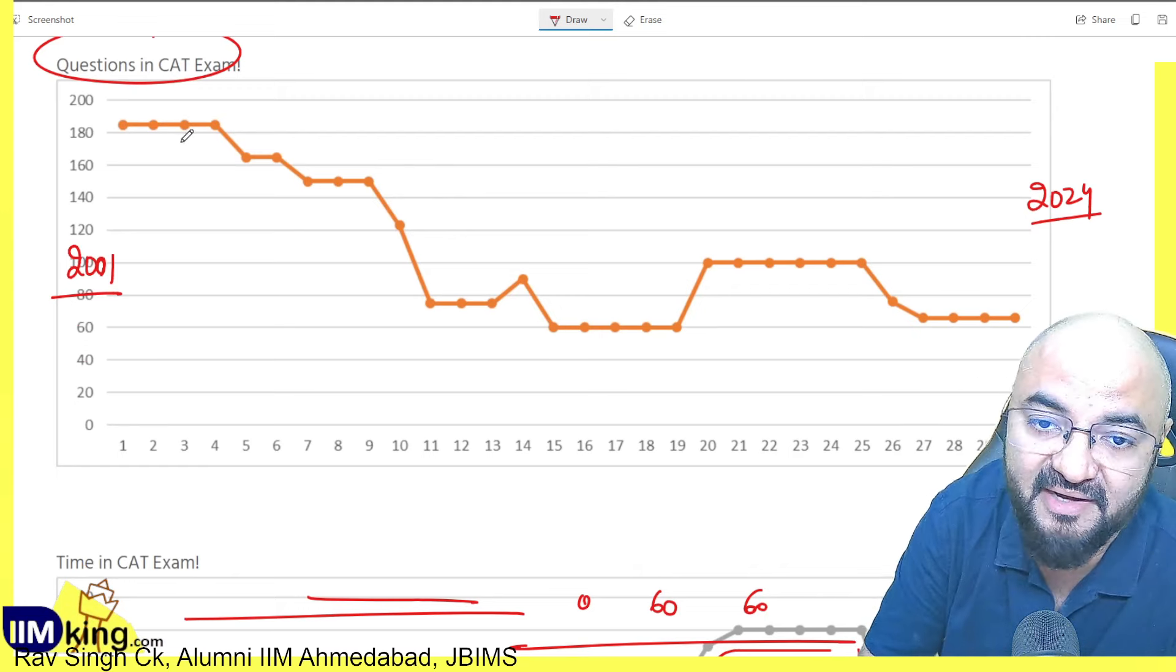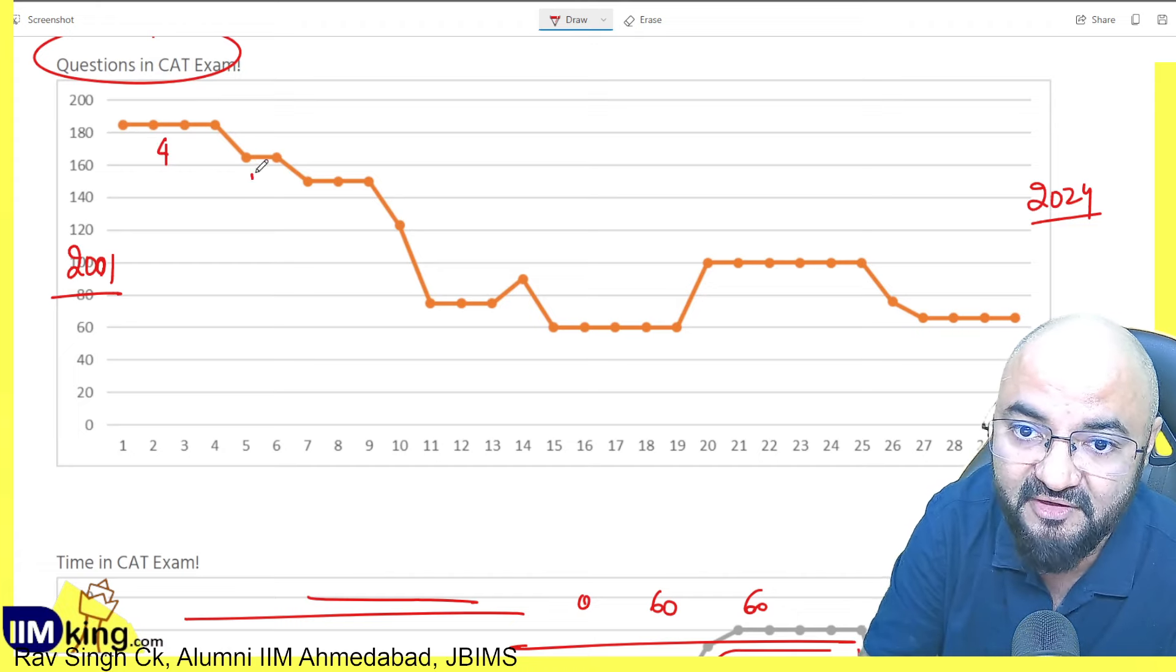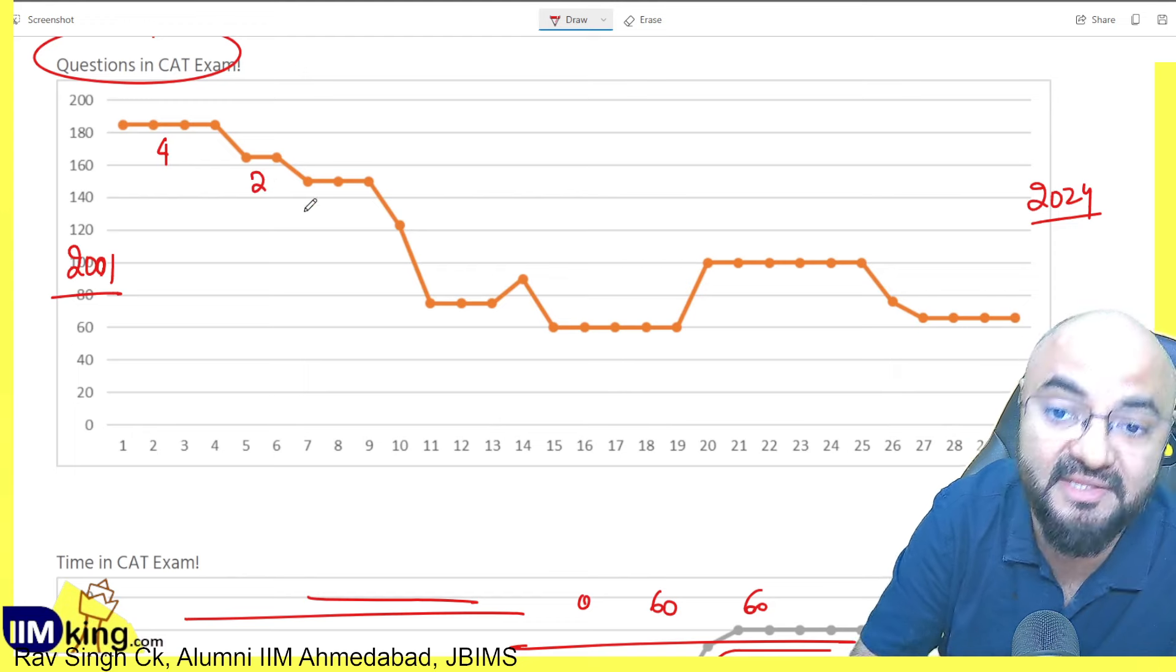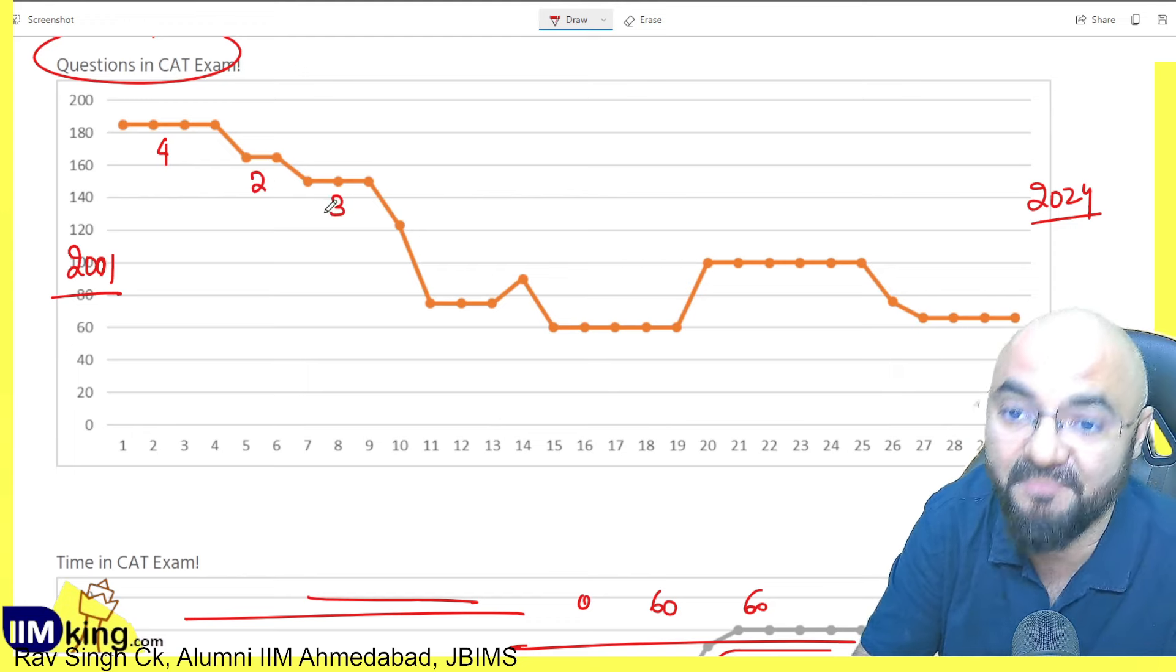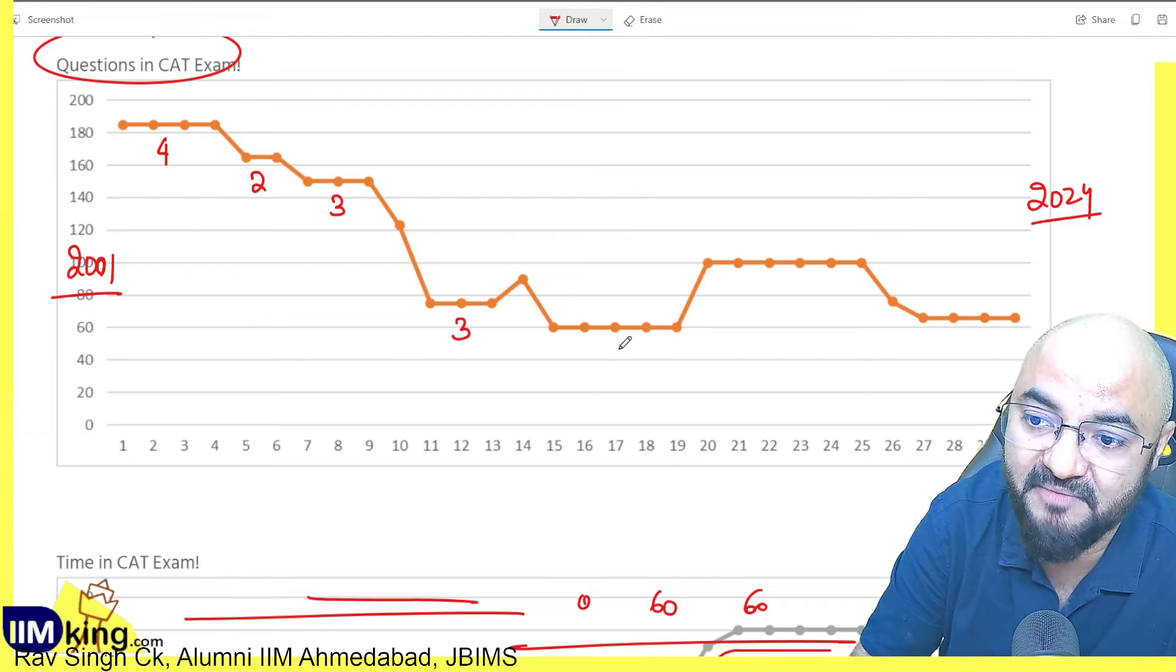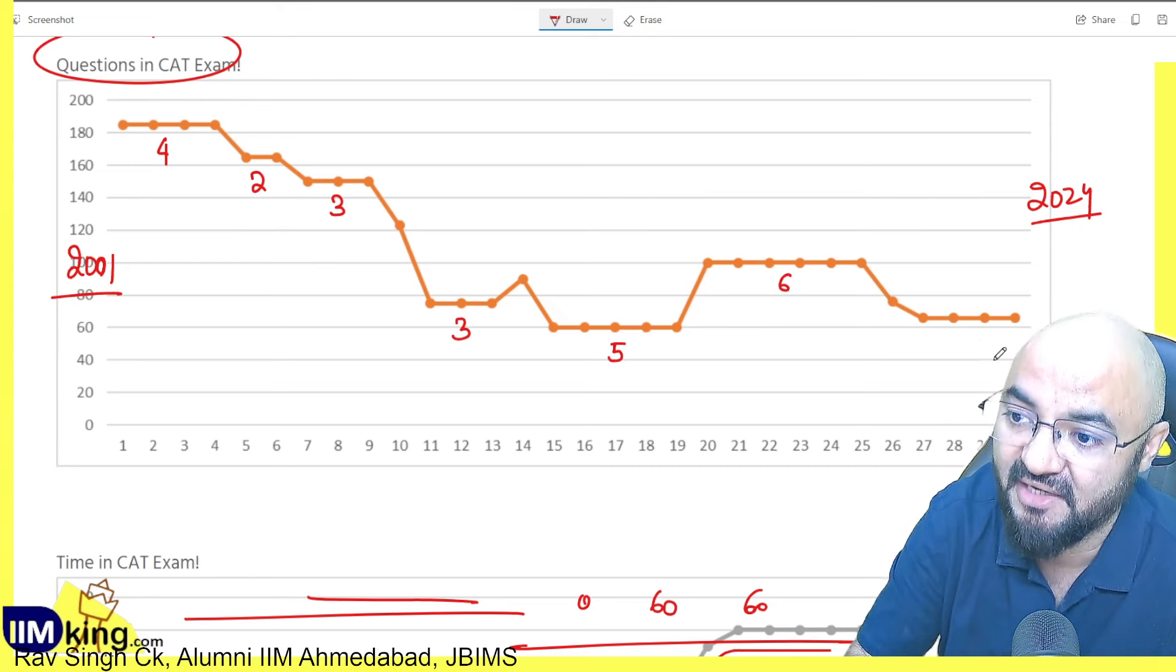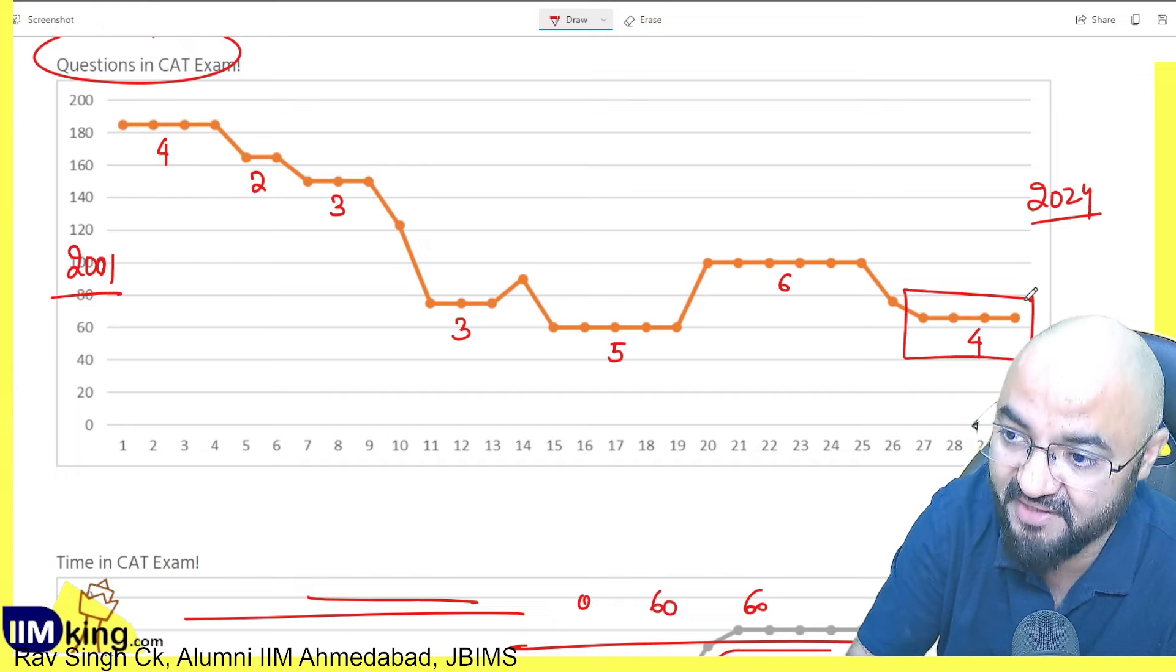Based on that I can make a trend that the first 4 years number of questions was same 185, then next 2 years they reduced to 175, then next 3 years pattern remained same, then next 3 years pattern changed, then next 5 years pattern changed, then next 6 years pattern changed and now last 4 years the same pattern is going on.